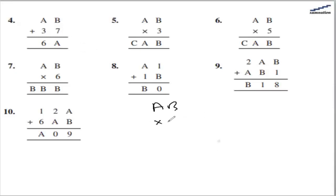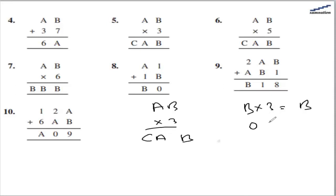The fifth question has ab multiplied by 3 giving acab. So b multiplied by 3 gives b. That is possible if b is 0 (since 0 times 3 is 0), or b is 1 (1 times 3 is 3 — not matching), or b is 5 (5 times 3 is 15, ending in 5). So b can be 0 or 5.